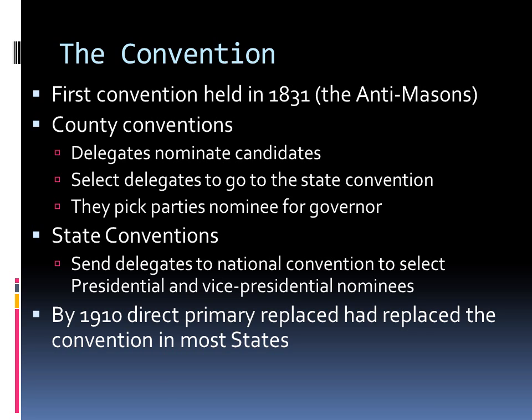By the 1910s, the direct primary had replaced the convention in most states as the principal nominating method in American politics. Conventions still play a major role in the nominating process in some states, notably Connecticut, Michigan, South Dakota, Utah, and Virginia. And as you will see, no adequate substitute for the device has yet been found at the presidential level.